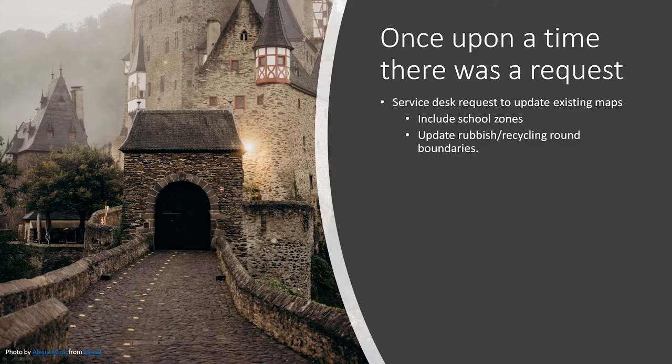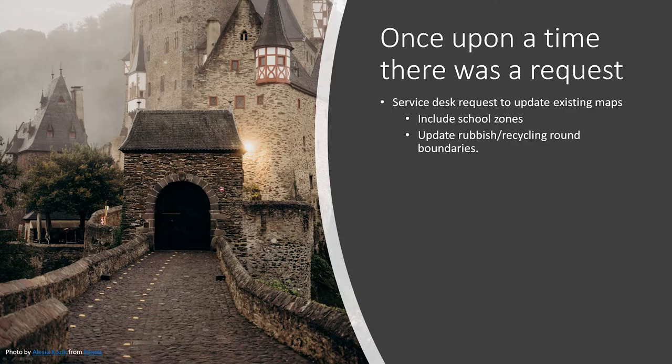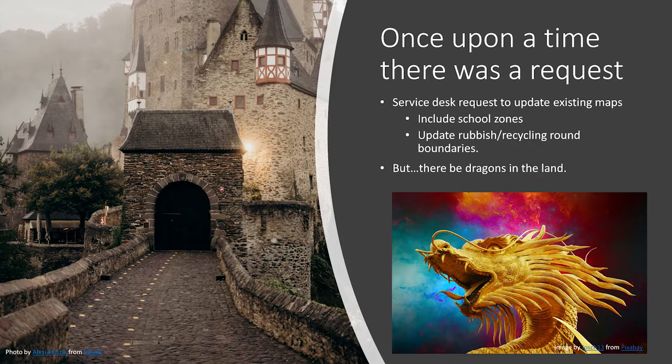Where did all this work start from? Once upon a time, a few months ago, we had a service desk request. Our waste services wanted school zones on these maps, because apparently parents don't like rubbish trucks around when they're picking up their kids. They also wanted some of the rubbish round boundaries updated. I thought that sounds pretty easy — challenge accepted. But the leader of our GIS team warned me that the data was not so great and the Atlas was a bit messy last time.